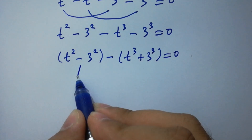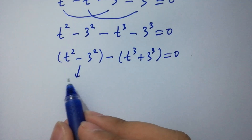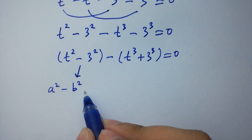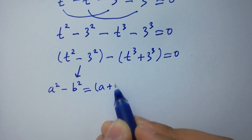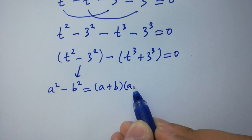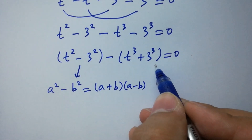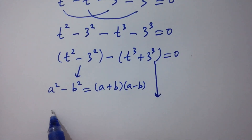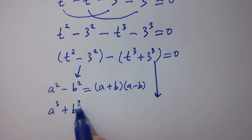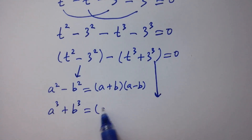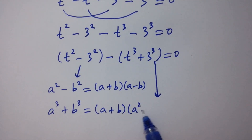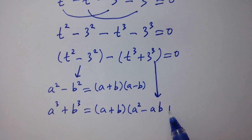Factoring: bracket t-squared minus 3-squared minus common t-cubed plus 3-cubed equals 0. We know the formula a-squared minus b-squared equals a plus b times a minus b, and the formula a-cubed plus b-cubed equals a plus b times a-squared minus ab plus b-squared.